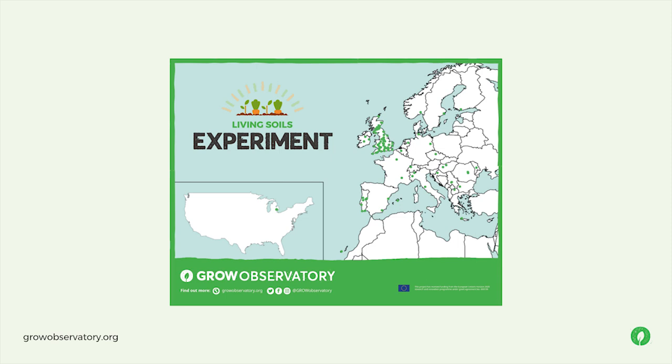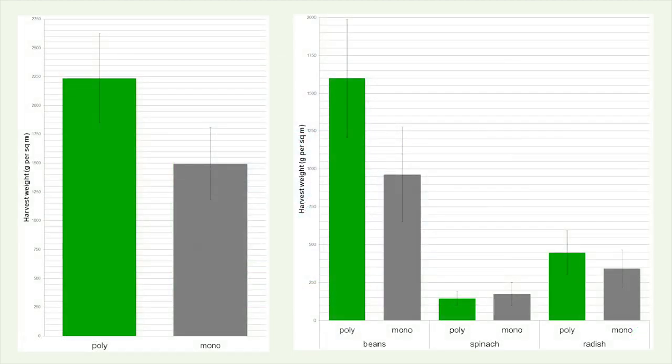We tested polycultures and monocultures growing together. People from all around the world joined the experiment, though focused in Europe. We grew climbing beans, spinach, and radish — each separately as monocultures and combined together as a polyculture. The results show that polycultures tended on the whole to be significantly more productive than monocultures. This analysis is paired for participants, taking into account individual site conditions and growing practices.